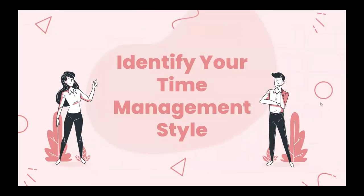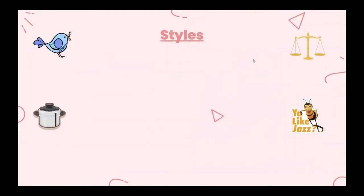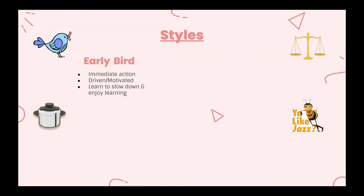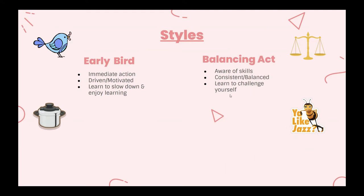To identify your time management style, you can answer questions like: how do you proceed when your professor posts a prompt for an essay assignment due in two weeks? If you said you would get it done immediately, you'd be classified as the early bird — you take immediate action, you're driven and motivated, which leads to success, but you need to slow down and enjoy what you are learning. As a balancing act, you are aware of your skills and how long it takes to complete assignments, and you're consistent and balanced, but you must go outside your boundaries to improve and challenge yourself.